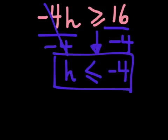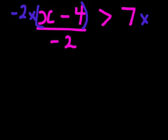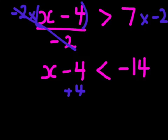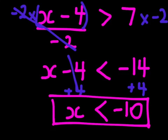The same thing happens when multiplying. Here, to get x by itself, I first eliminate the denominator by multiplying both sides by −2 — they cancel. On this side I'm left with x − 4. Because I multiplied by a negative, the sign changes from greater than to less than. 7 × (−2) gives −14. Now I continue: add 4 to both sides — that cancels — and since I'm not timesing or dividing by a negative this time, the sign stays the same. −14 + 4 gives x < −10.